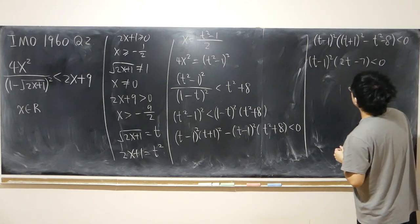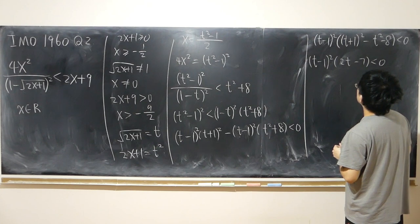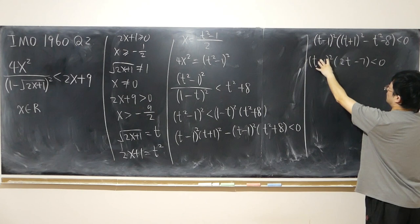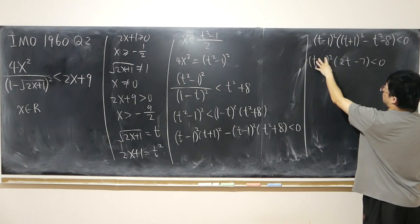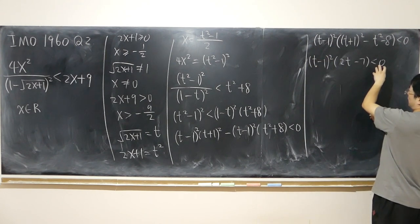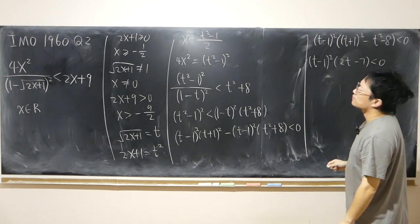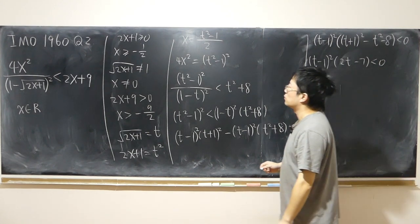And so to make the whole thing negative, knowing that this part is positive. So cannot equal to 0, first of all, because it's strictly negative. So t cannot equal to 1. t cannot equal to 1.